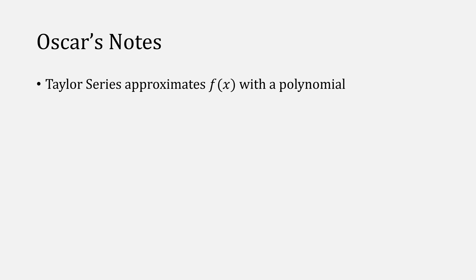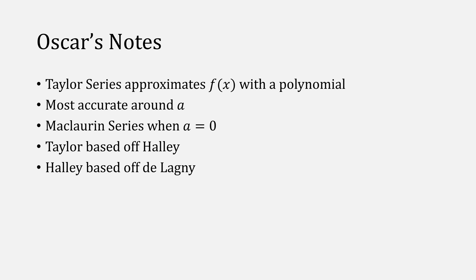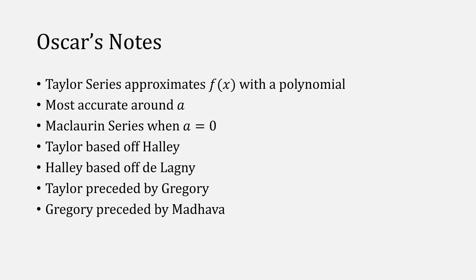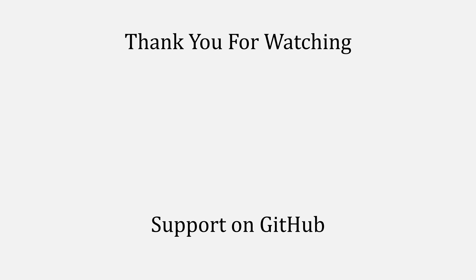Some of the key points of this video are that Taylor series approximates a function using a polynomial, and it will be most accurate around the point a. When we have a equal to 0, that gives us a Maclaurin series. Historically, Taylor built off of the work of Halley, and Halley built off of Delauny. Of course, Taylor had been preceded by James Gregory, who had also been preceded by Madhava. The code and images I created will be hosted on GitHub. Thank you for watching and for your continued support — this video barely scratched the surface of Taylor series, even though we did a very deep dive into the history. Let me know if there are other topics you'd like me to cover in the GitHub forums and in the comments below.